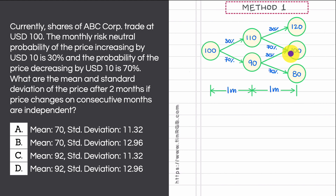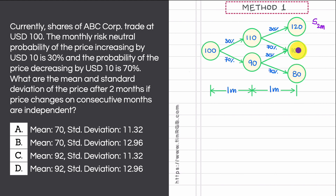Positioning ourselves at this point in time at this node of the tree, the share price at the end of two months is not known and hence should be modeled as a random variable — let's denote it as S with a subscript of two months. This random variable is a discrete random variable; the three values it can take are specific, separate, and have gaps between them.